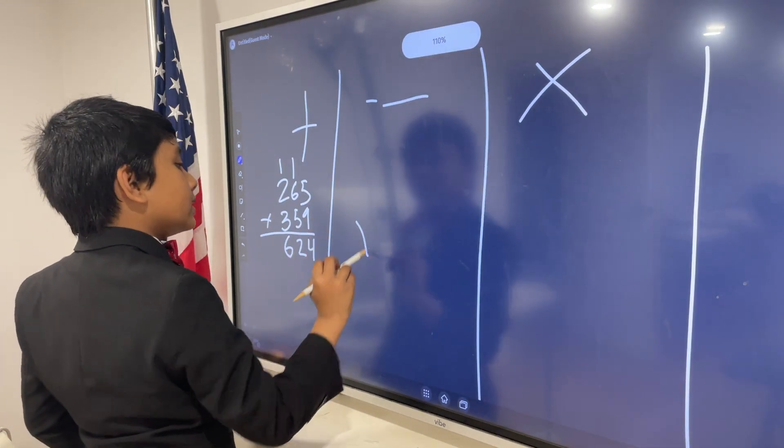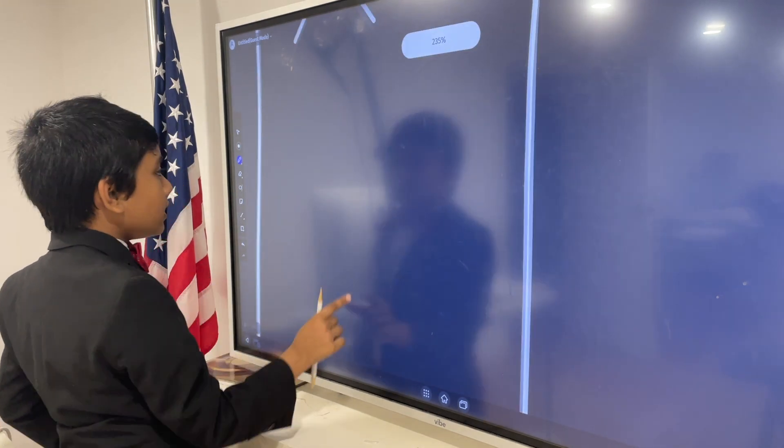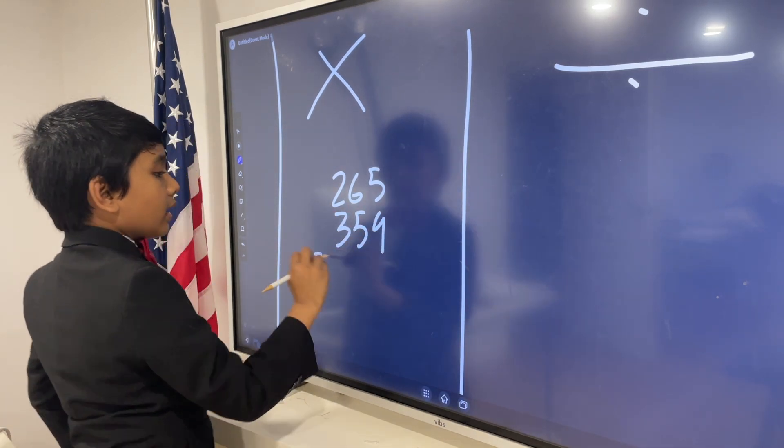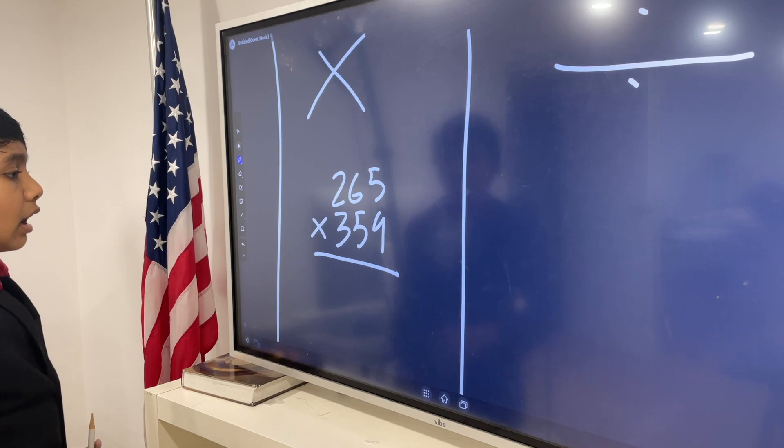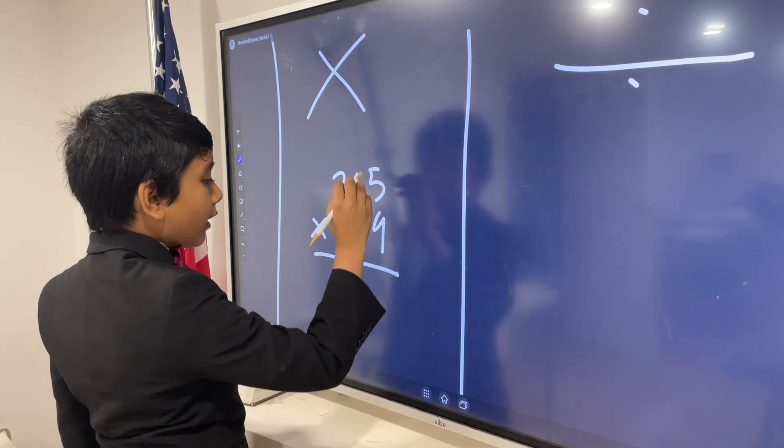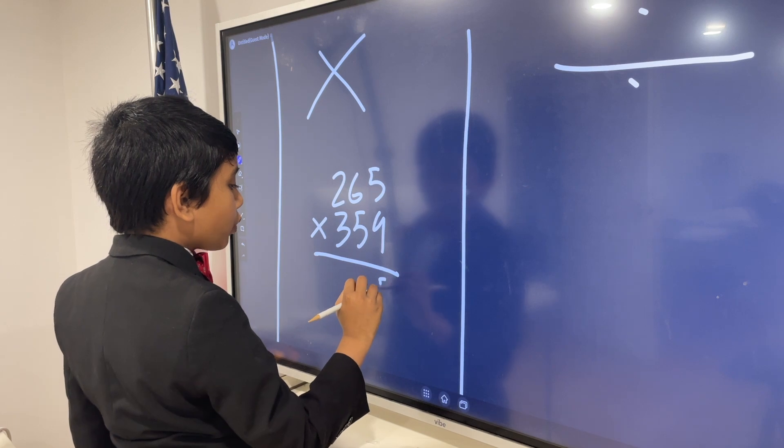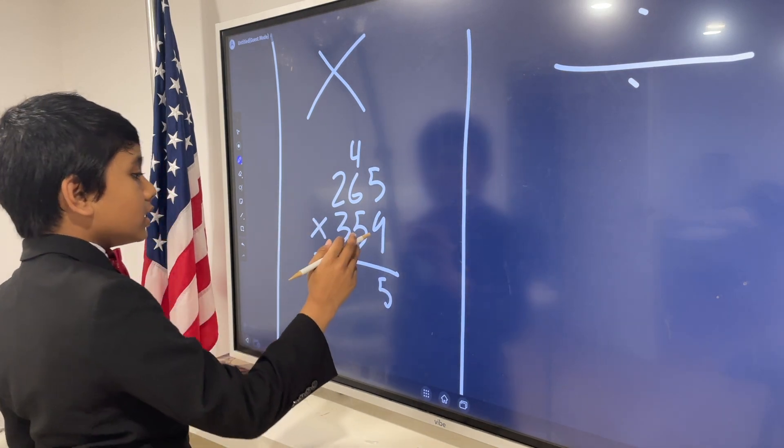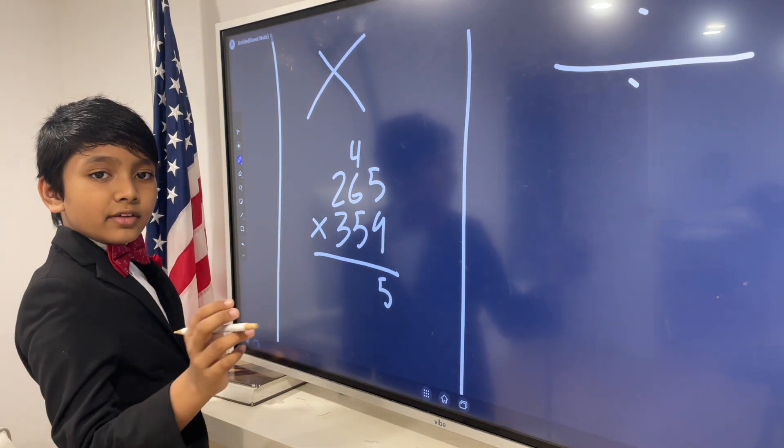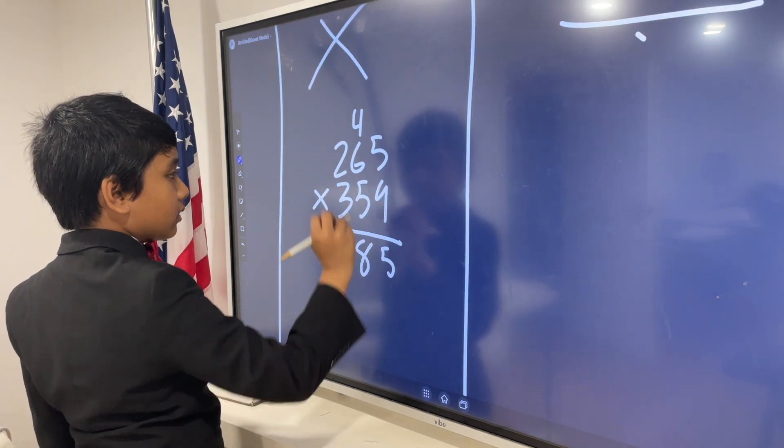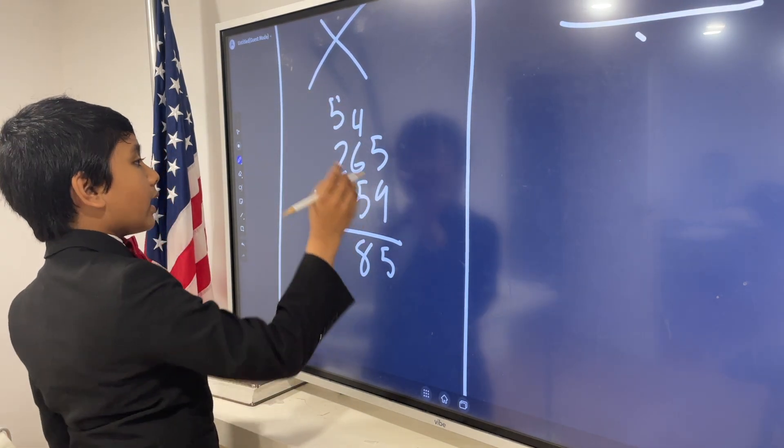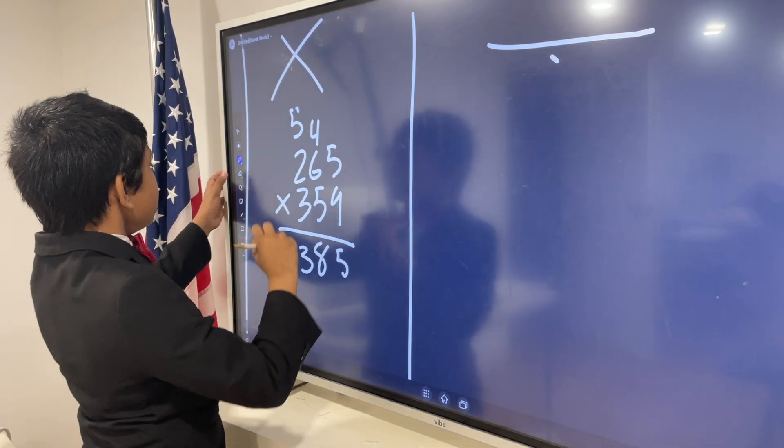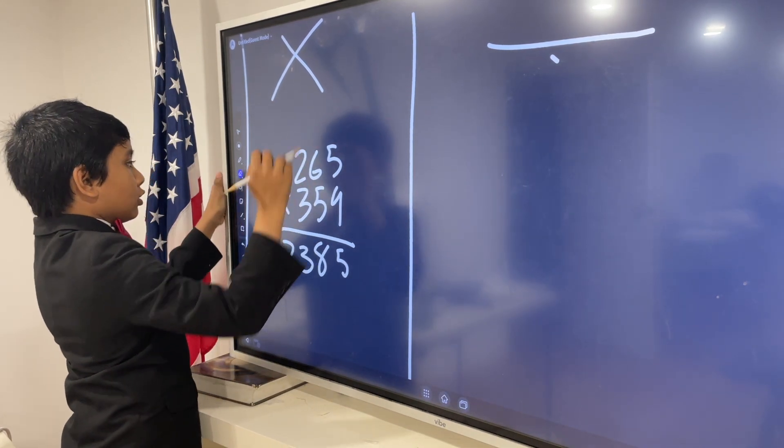Subtraction works mostly the same way. Now, multiplication... Let's say we were multiplying 265 and 359. We're using the same two numbers. And so, 9 times 5, 5 times 9 is going to be 45. So, we carry that 4 over to the next row. So, we get 9 times 6 is 54 plus 4 is 58. We carry that 5 up. 9 times 2 is 18 plus 5 is 23.